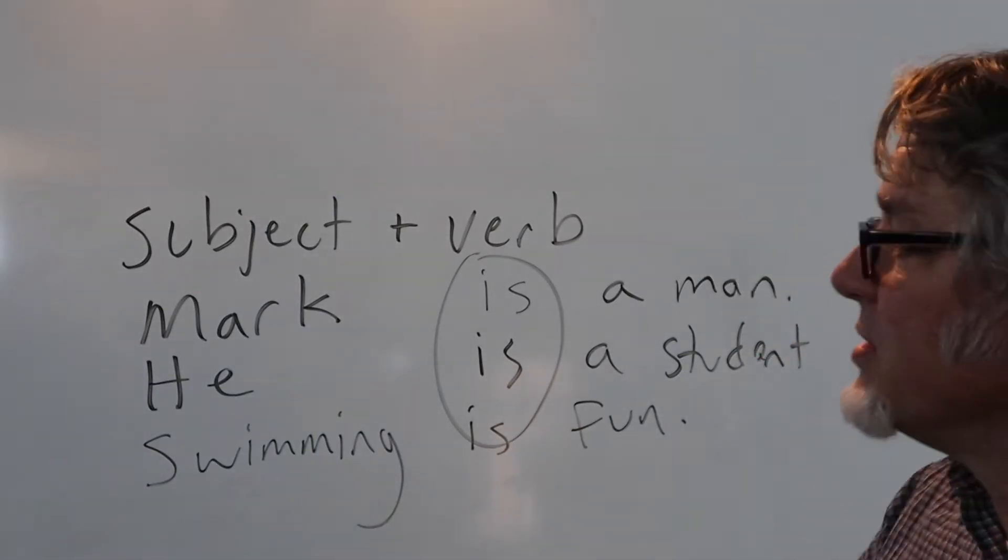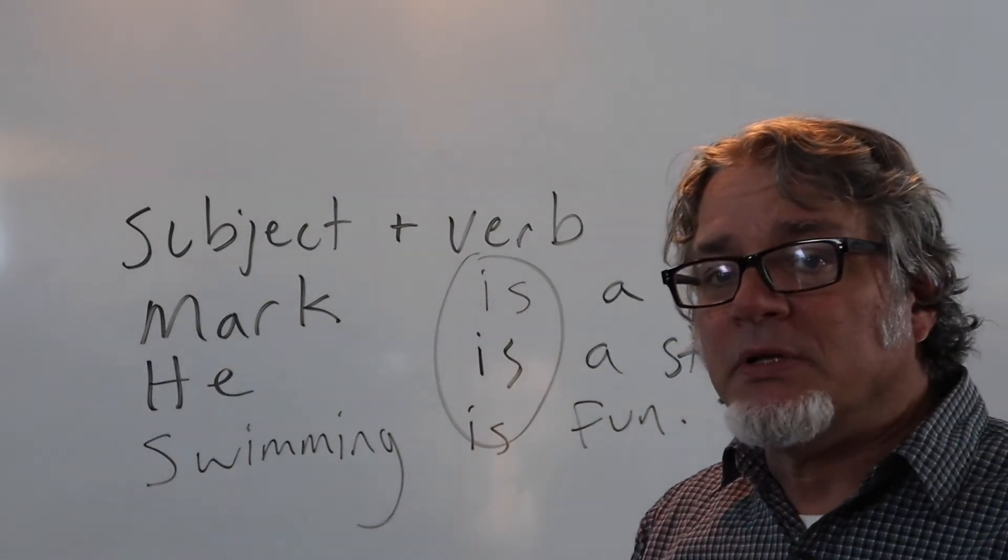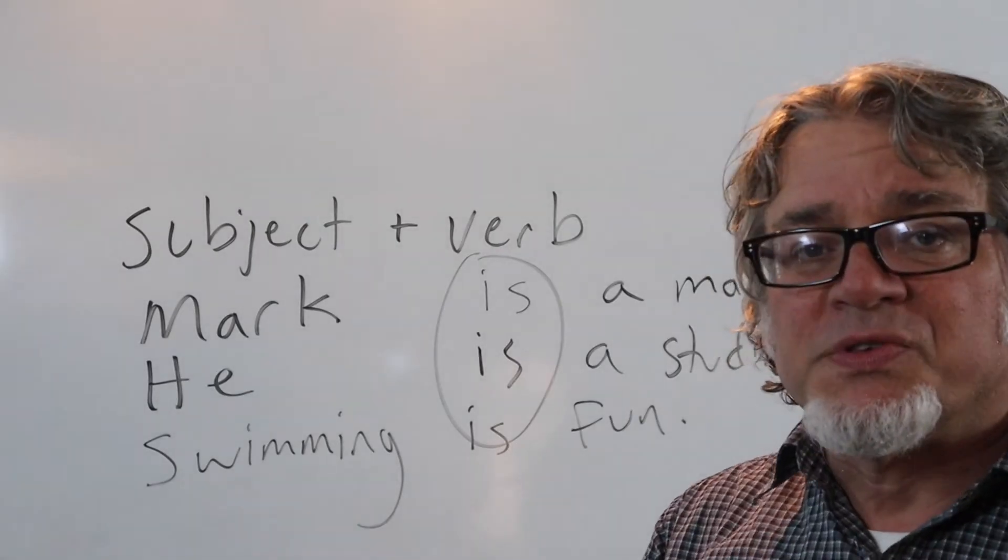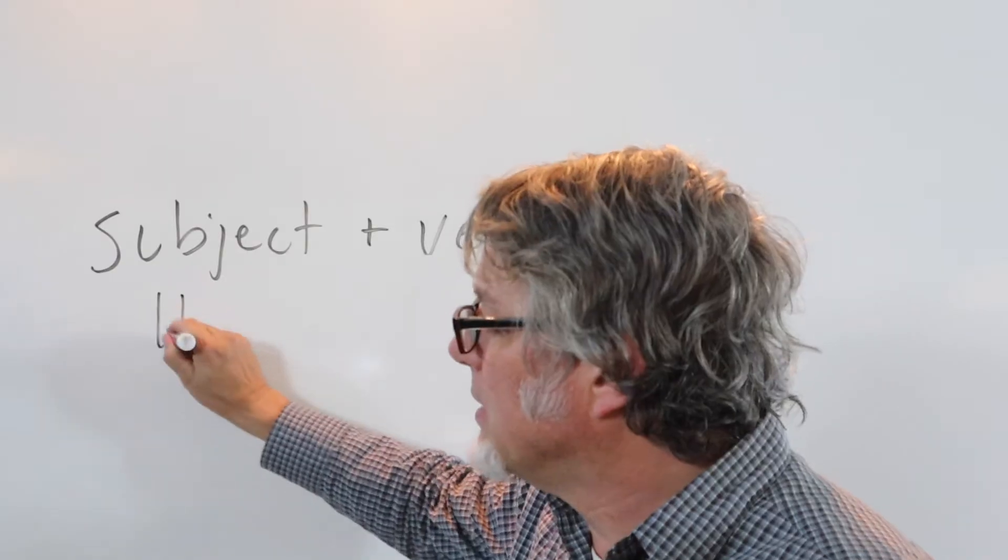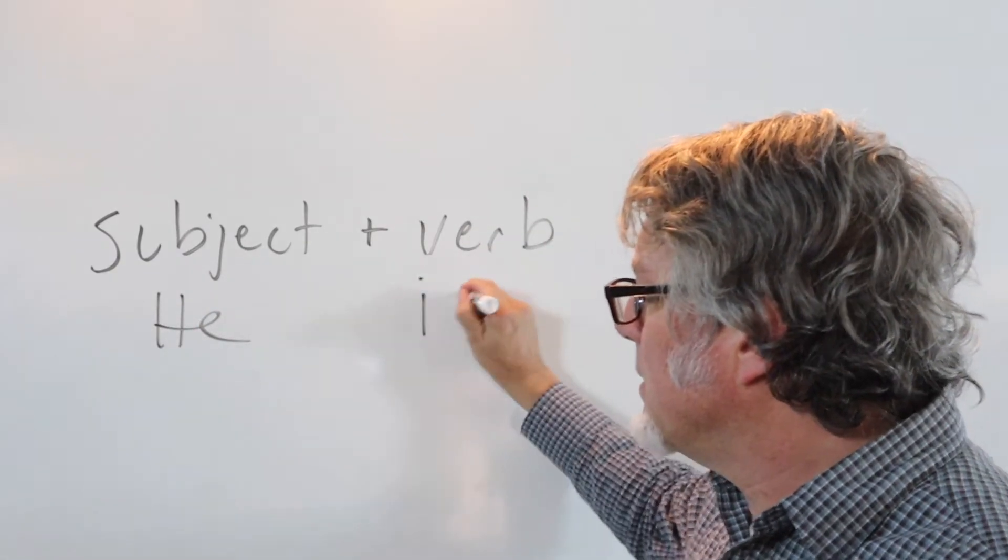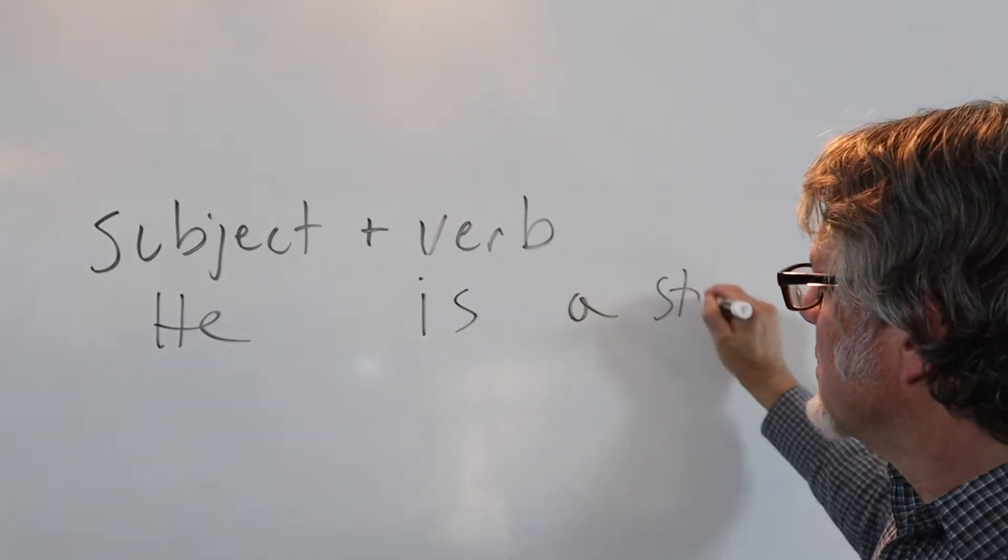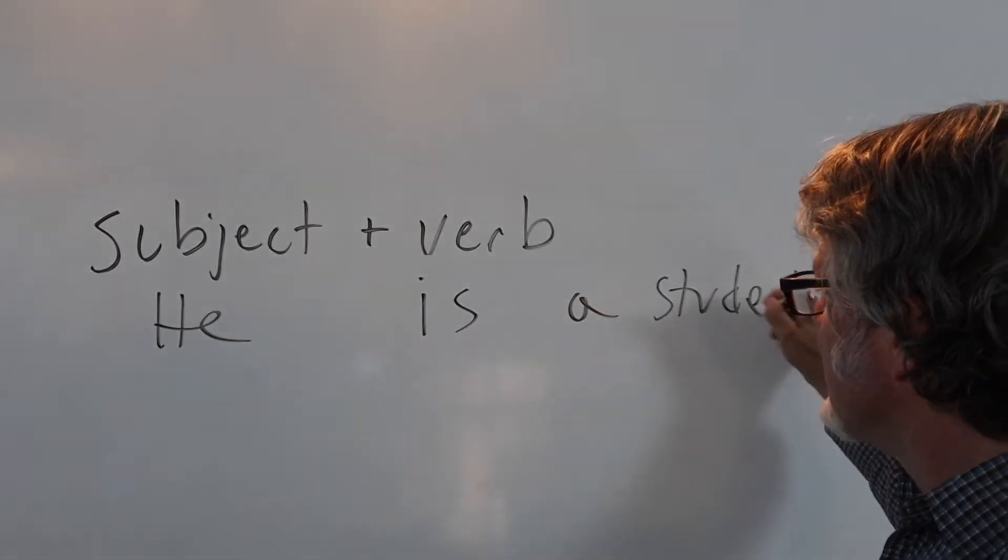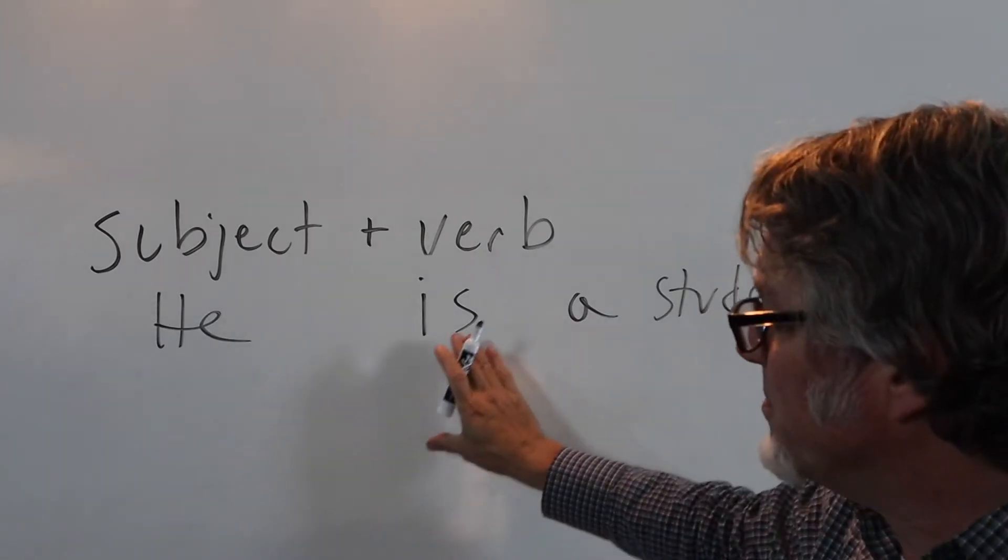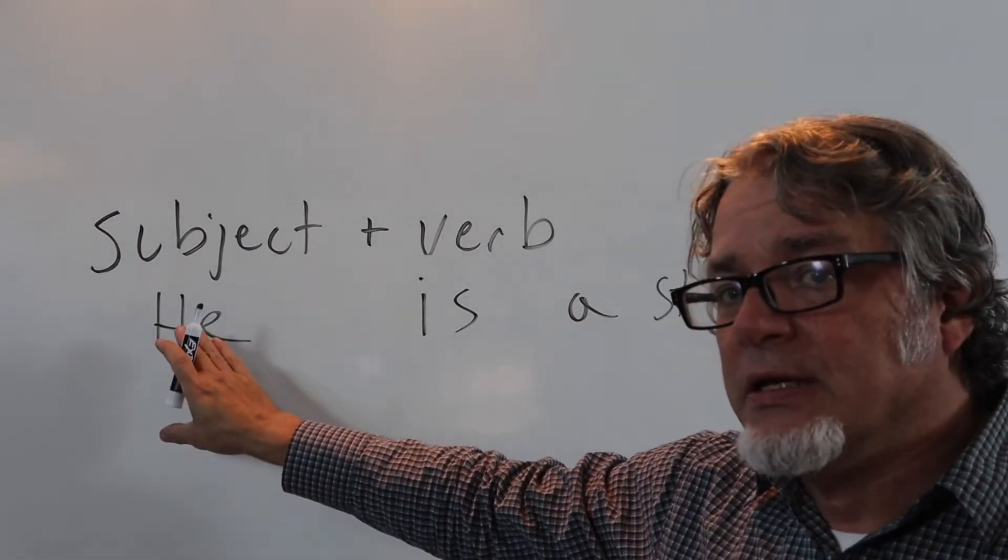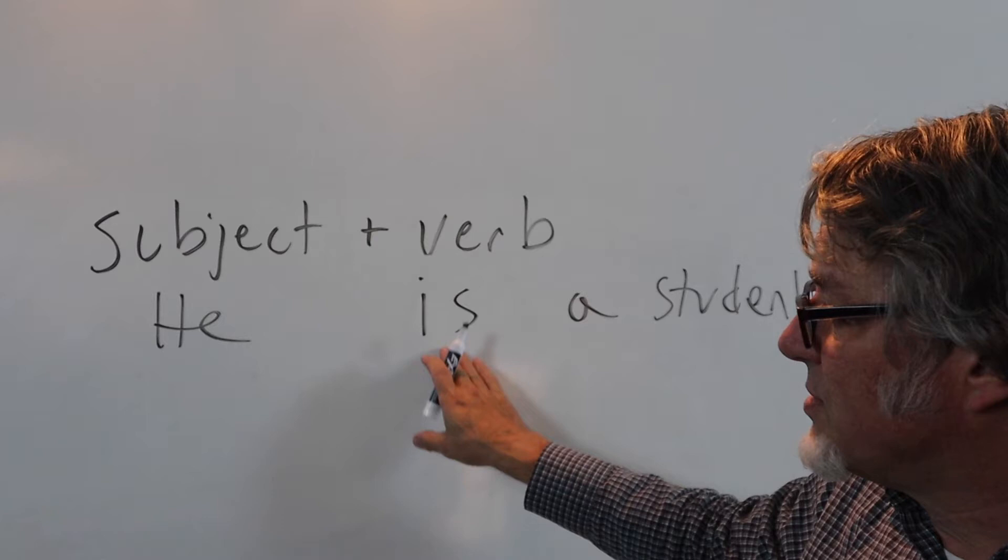If you don't match the subject and the verb properly, your English will sound strange. He is a student. This is in the present tense, this is the verb be, and these two match. Singular, singular.